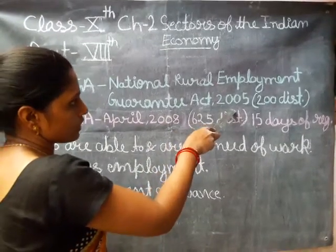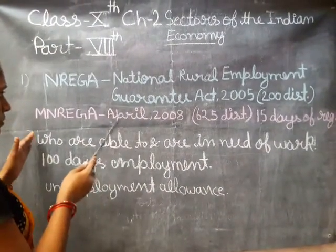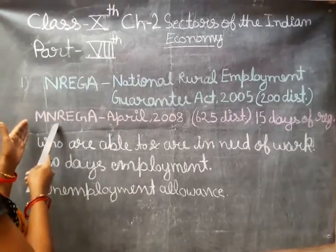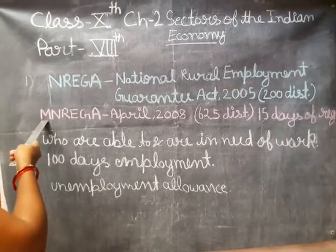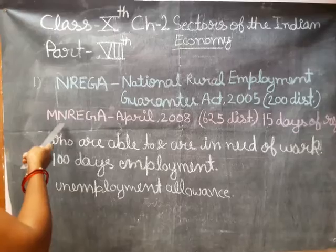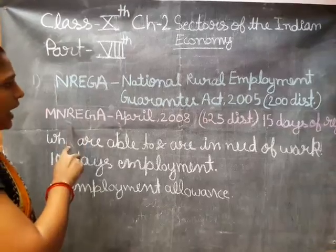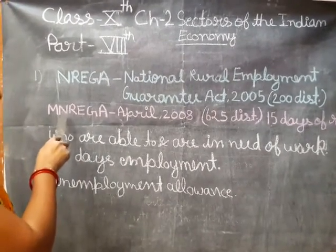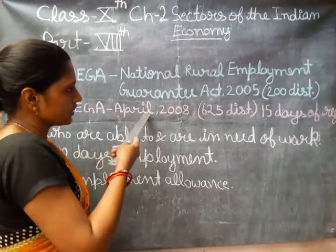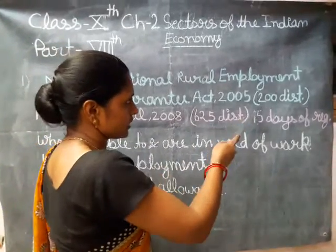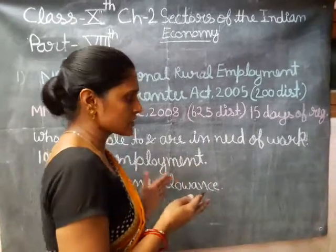It came into force in 2005 and was started with 200 districts of India. Later, a change was made to the name — 'M' for Mahatma Gandhi was added — making it MGNREGA: Mahatma Gandhi National Rural Employment Guarantee Act. This change in name was done in April 2008, and the districts also increased from 200 to 625 districts.